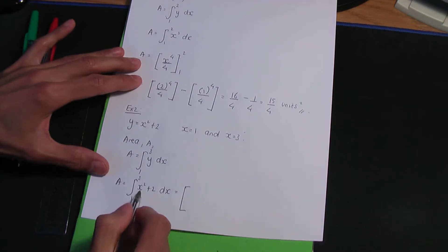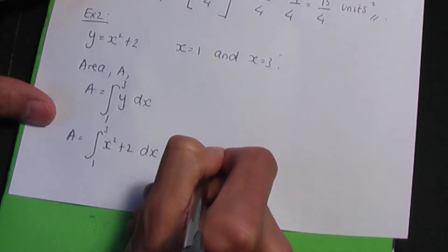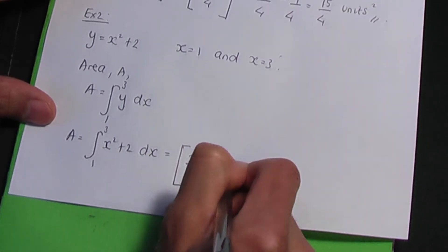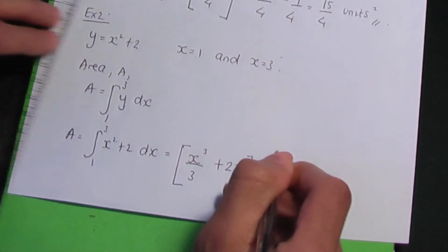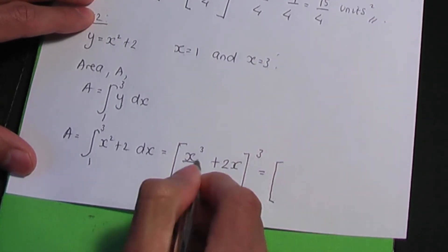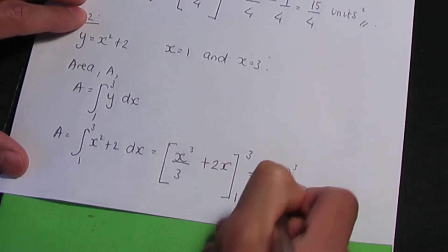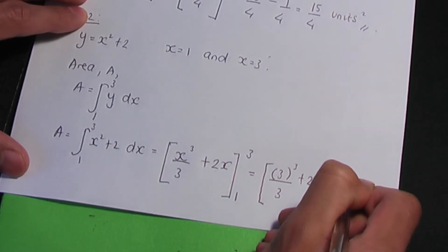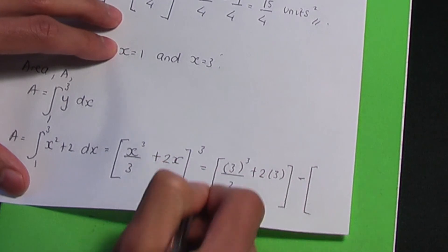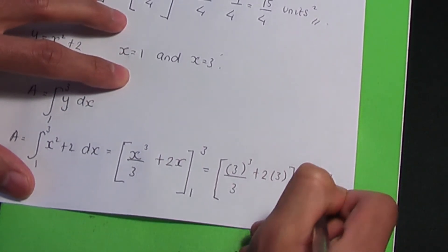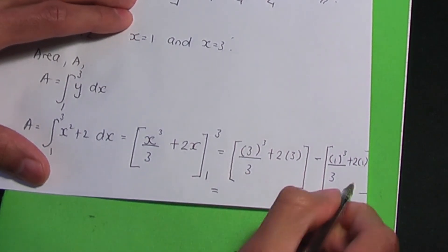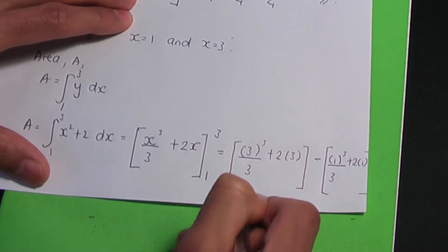Let me open up a square bracket and integrate. When I integrate x squared, I should have x cubed over 3 — add 1 to the power, divide by the result. Plus, when I integrate 2, it's 2x. Let me close this square bracket and write the limits 3 and 1 on the right-hand side. Now let me replace the limits. Upper limit 3 goes in first: it's 3 to the power of 3 over 3 plus 2 times 3, minus, and then the lower limit being 1: 1 to the power of 3 divided by 3 plus 2 times 1. If you make the calculation, you should have an answer of 38 over 3 units squared.